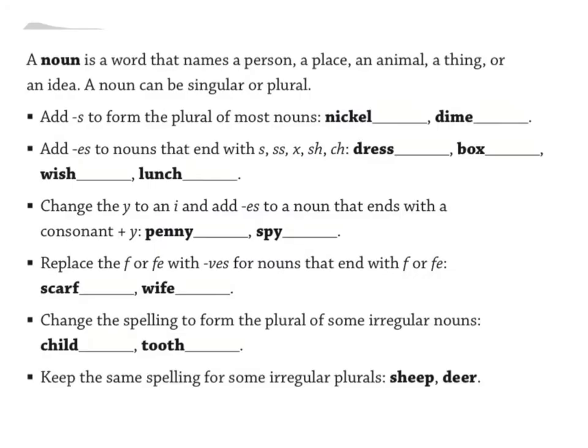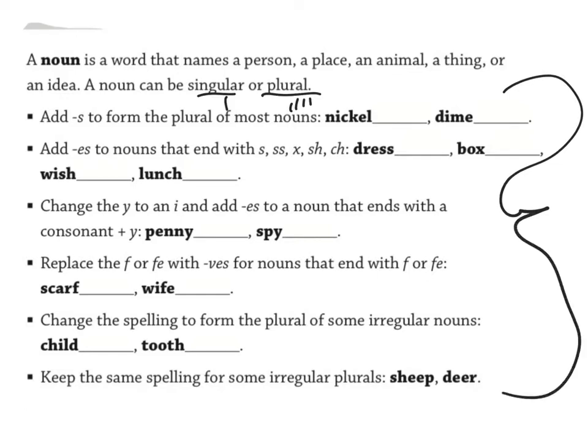A noun is a person, place, thing, animal, or an idea. It can be singular, meaning just one, or plural, meaning more than one. Here are all the different things that we might need to do to make them plural.